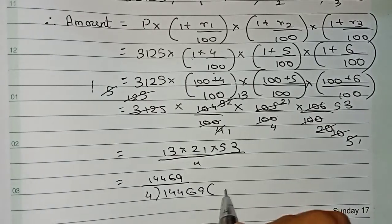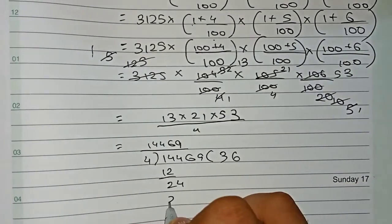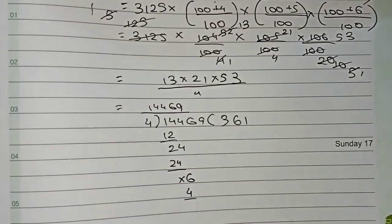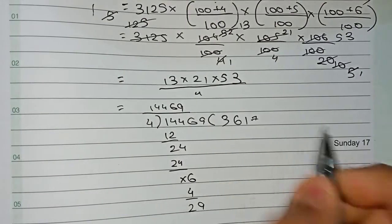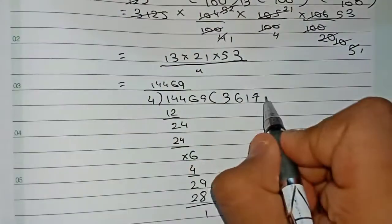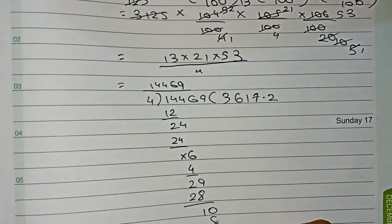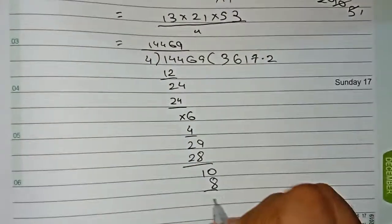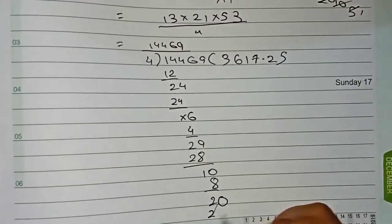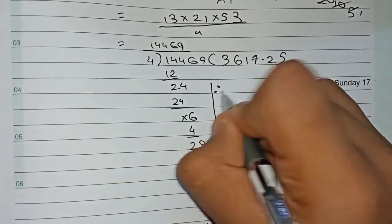Divide it now. 14 by 4 is 3 remainder 2, 24 by 4 is 6 remainder 0, 6 comes down, 4 by 4 is 1. 9, 7s are 28 remainder 1, give it a decimal point here. Now one more 0, so 4 twos are 8, it will be 2. One more 0 I get, so directly it will become 5. Our amount is equal to 3617.25.